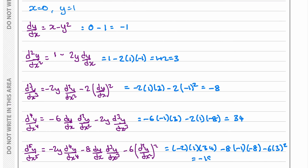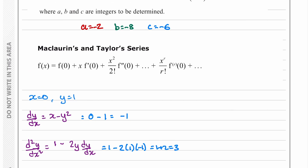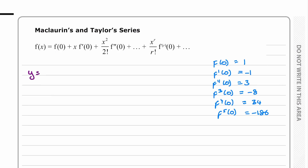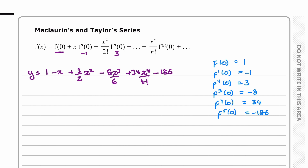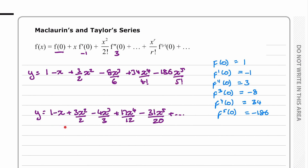Now we substitute these values into the Maclaurin series: y = 1 minus x plus (3/2!)x² minus (8/3!)x³ plus (34/4!)x⁴ minus (186/5!)x⁵. Simplifying each fraction gives the final series solution.